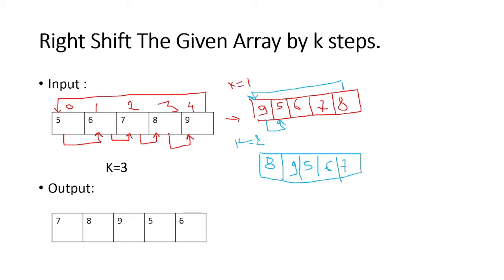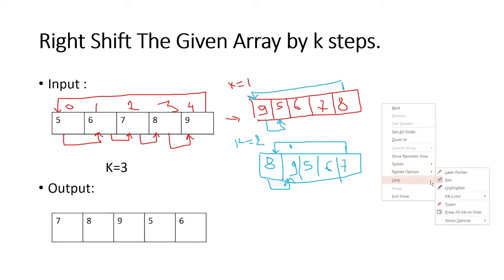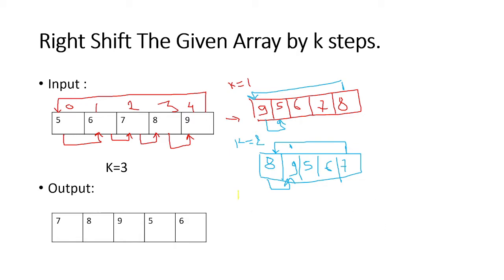In the 3rd iteration, 8 will shift to the 1st position and 7 will go to the 0th position. So in our 3rd iteration, the output will be 7 as the 0th element, then 8, 9, 5 and 6. This is our 3rd iteration and we have received the expected output. Let's see how we will do this in coding.